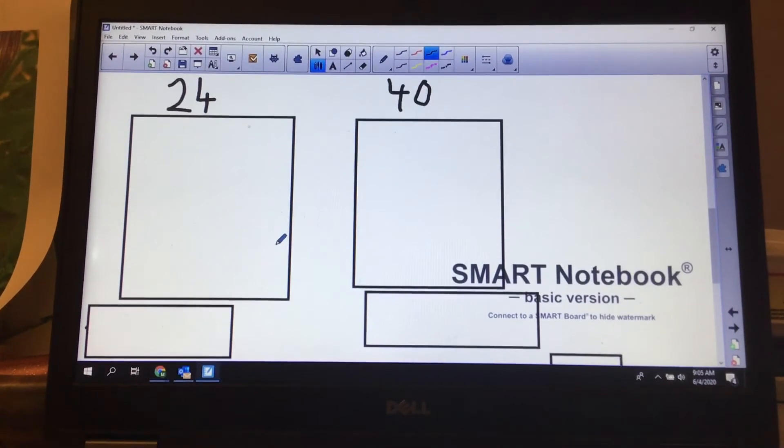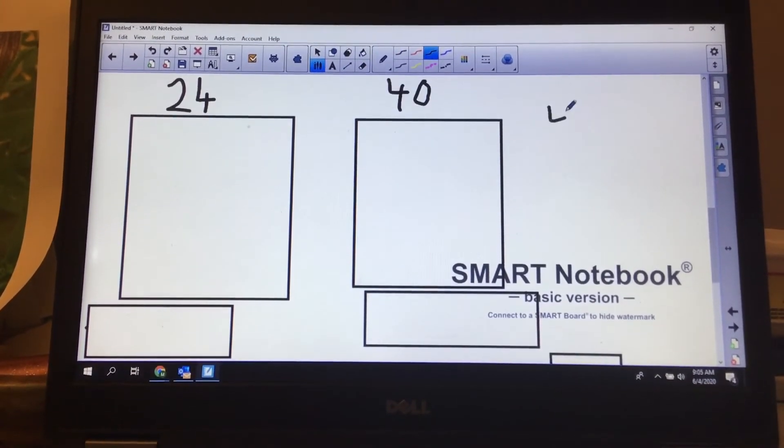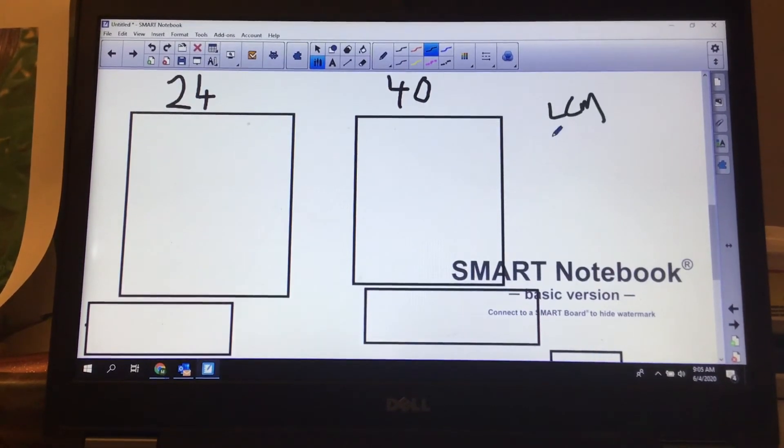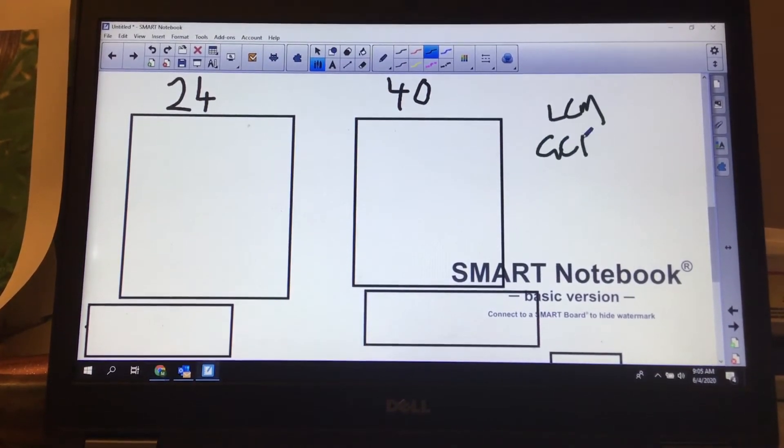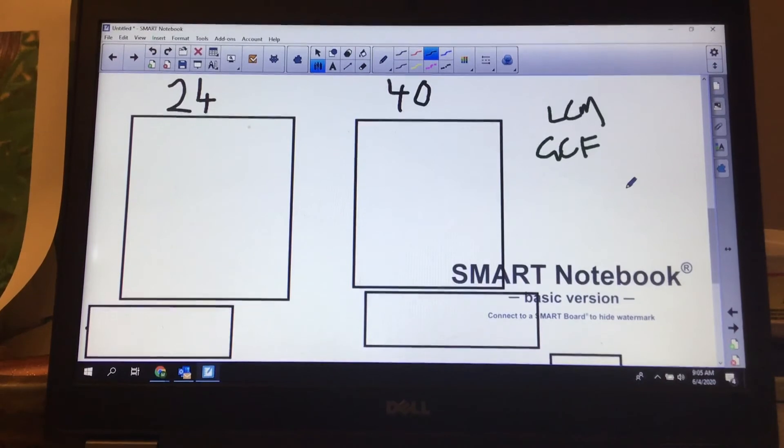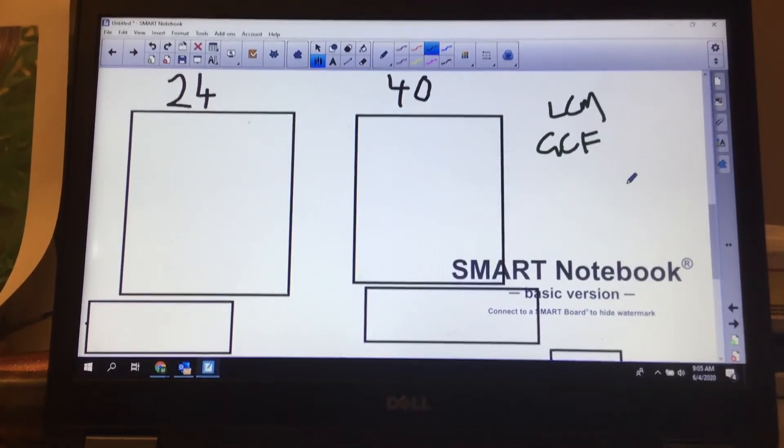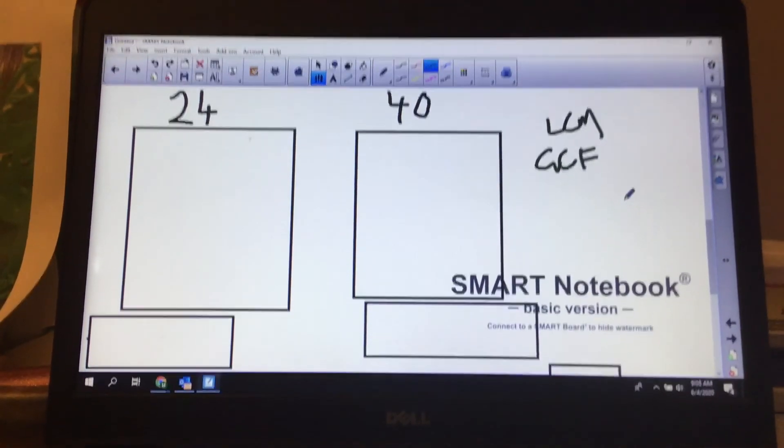See if you can do this one by yourself. The least common multiple and the greatest common factor of 24 and 40. So pause your video and try it please.